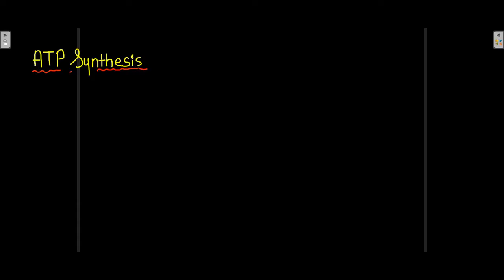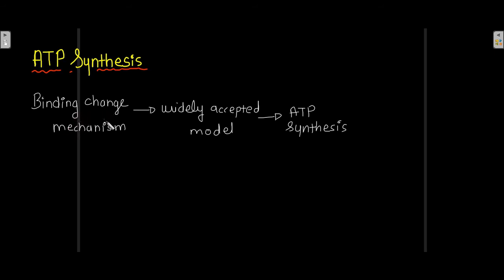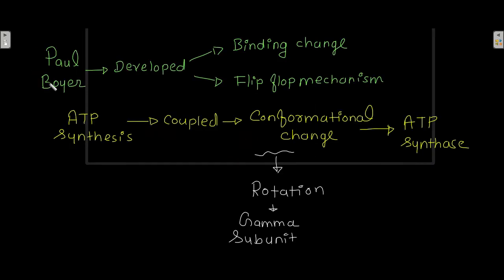ATP synthesis: the binding change mechanism is the widely accepted model for ATP synthesis. Paul Boyer developed this binding change mechanism, also called the flip-flop mechanism, which suggests that ATP synthesis is coupled with the conformational change of the ATP synthase. This conformational change results from rotation of the gamma subunit, which then leads to ATP synthesis.